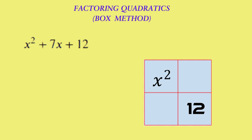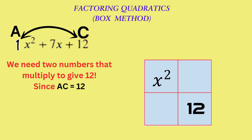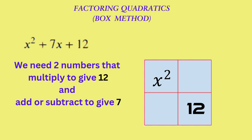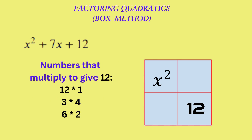To fill the next two spaces in the box, we need to find two numbers that multiply to give 12 and add or subtract to give the middle term 7. An easy way to do this is to write down all the pairs of numbers that multiply to give 12 — for example, 12 times 1, 3 times 4, and 6 times 2. Now choose the pair that either adds or subtracts to give the middle term 7. That would be 3 and 4.